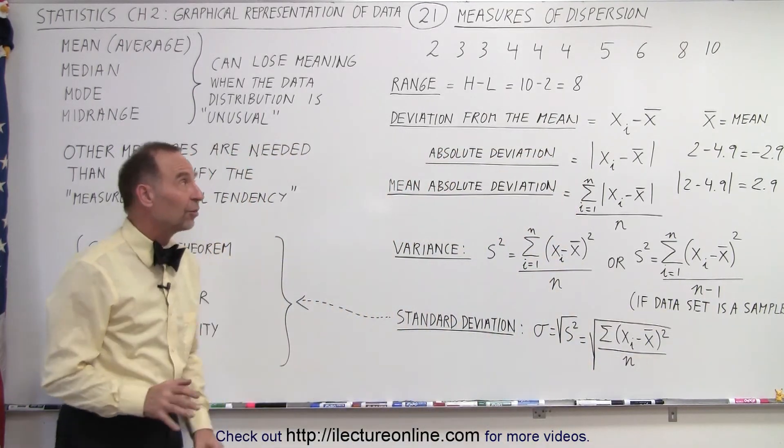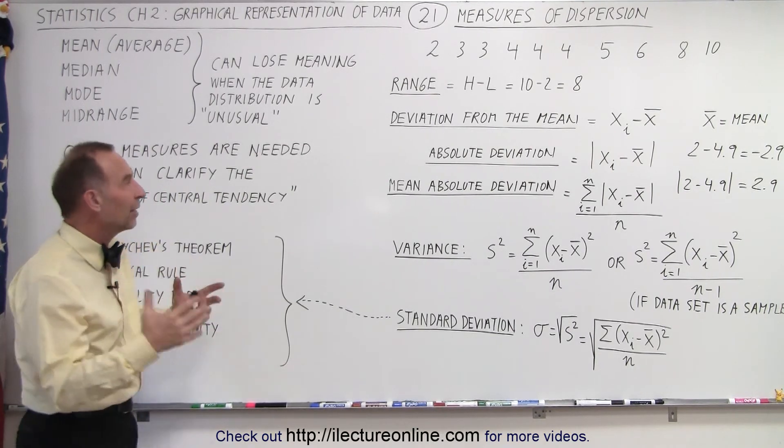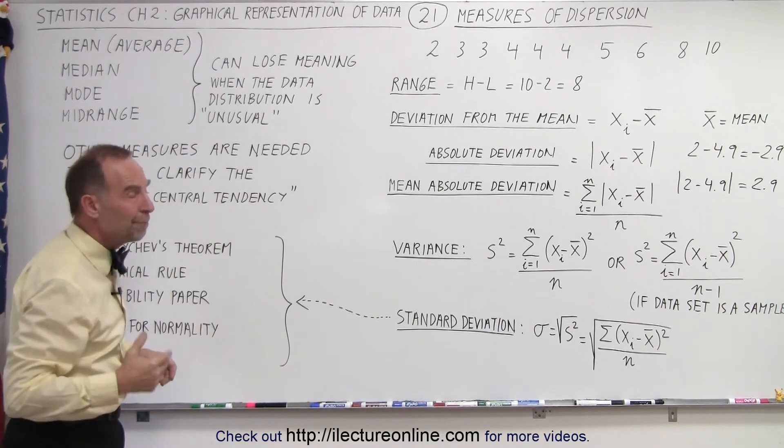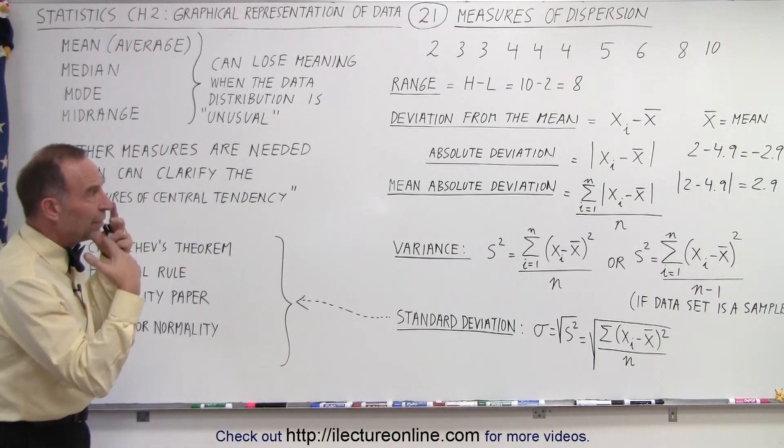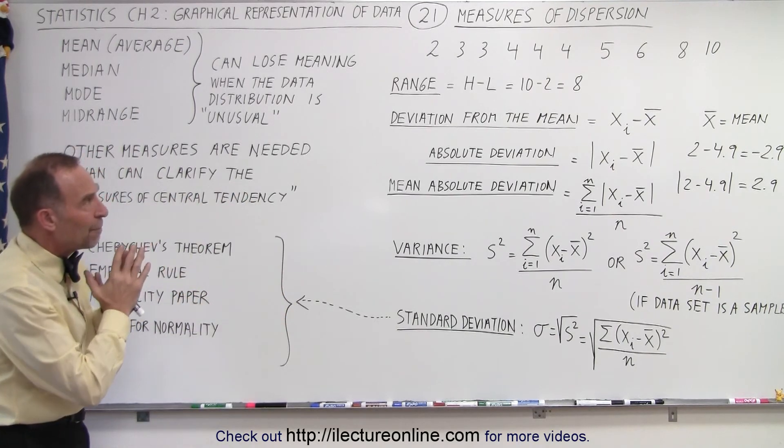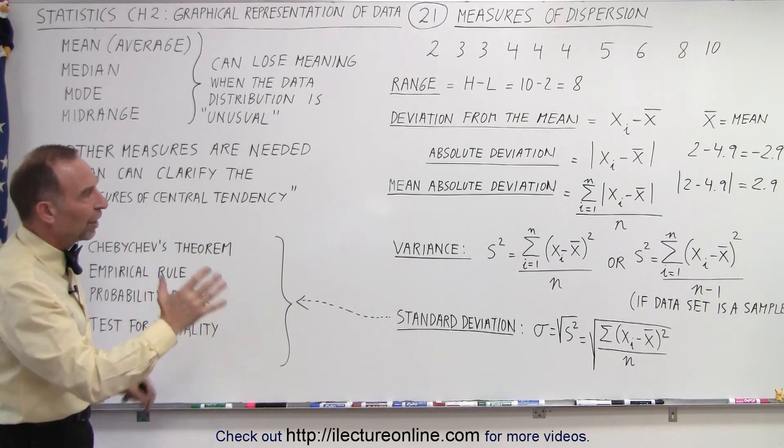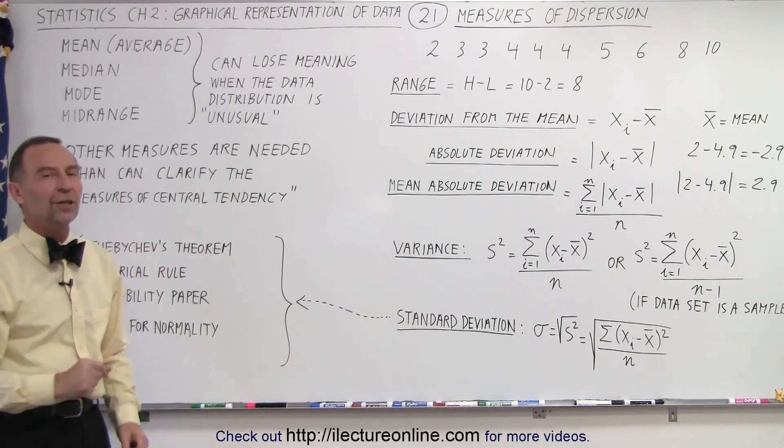So those are the things that we're going to use to get a better idea of how valid, of how useful our mean, median, mode, and mid-range is with respect to how the data is distributed, how the data is dispersed. And so these types of measures can give us a much better idea of how to deal with that. And that is how it's done.